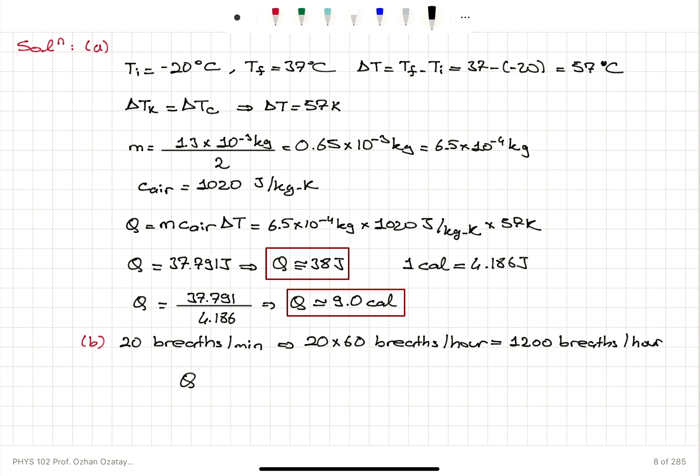So the total energy lost in one hour will be 1200 multiplied with the energy loss in one breath, 38 joules. This gives us a total heat loss of 4.6 times 10 to 4 joules. And if we consider the calorie unit, it will be 1200 times 9, which will be 1.1 times 10 to 4 calories of heat that is lost in one hour.